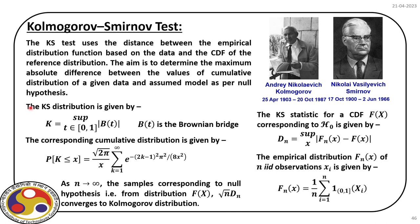The KS distribution involves Brownian bridge BT — we won't go into the details. Just for completeness, the cumulative distribution for this Kolmogorov random variable is shown on screen. As n goes to infinity, the sample corresponding to the null hypothesis converges to √n × Dₙ, where Dₙ is the KS statistic. This quantity converges to the Kolmogorov distribution in the limiting sense.